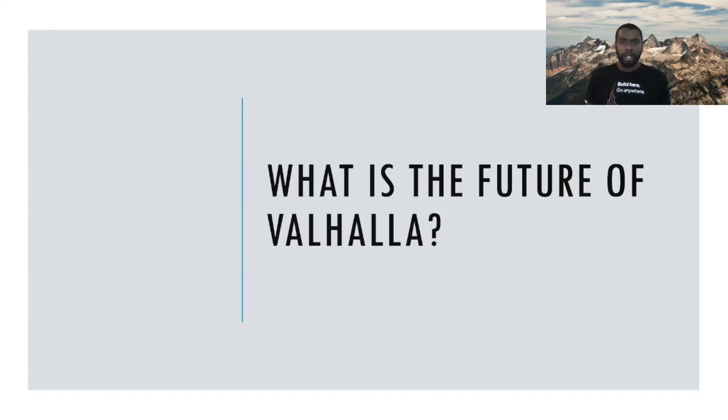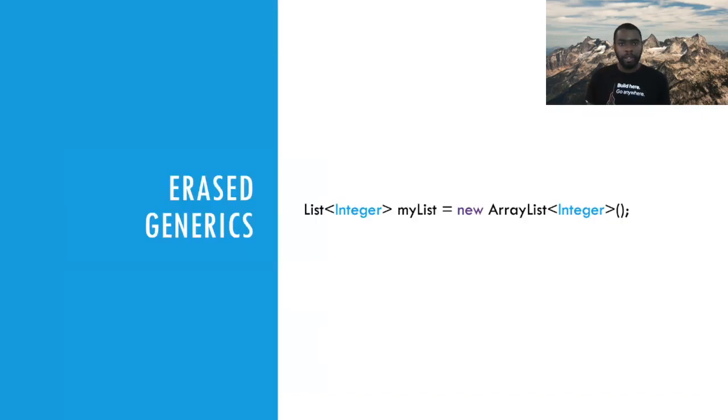What is the future of Valhalla? We looked at inline types and how it can be a great benefit to performance. However, we still need to solve the issue with generics, as these are very common use types. In today's world, when we want to write generic code with an int, it looks something like this. Ideally we want to get to this picture. To date there's been a lot of prototype work but nothing concrete. This will likely be released after inline types. But this is something that the expert group wants to look at in the future.